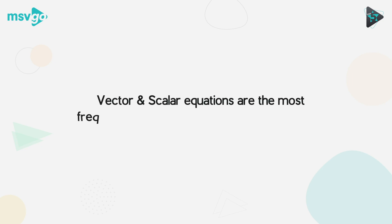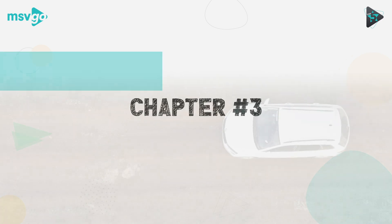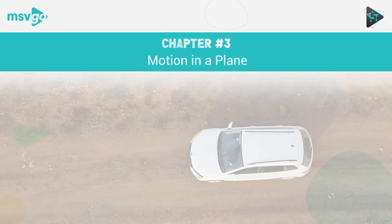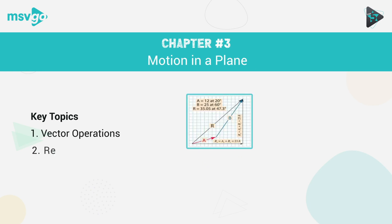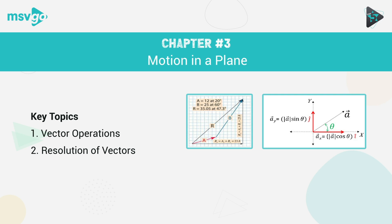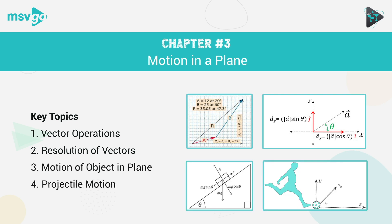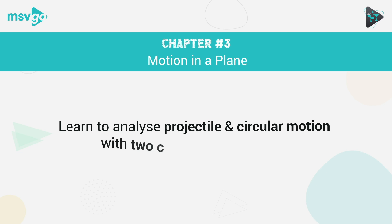Cannot stress the importance of learning vector and scalar quantities. The third chapter you cannot miss revising is Motion in a Plane. The important topics under this chapter are: Vector Operations, Resolution of Vectors, Motion of Object in Plane, and Projectile Motion. You will understand how to analyze projectile and circular motion by mapping it on a graph.